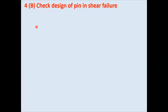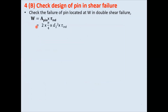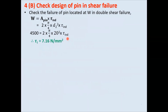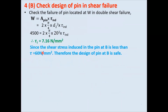Check design of pin for double shear failure: W = 2 × (π/4) × d2² × τ_induced. Substituting all values of W and d2, we find τ_induced = 7.16 N/mm². The permissible shear stress is 60 N/mm². Since induced stress is much less than permissible, the design of pin at load point is safe in shear failure.